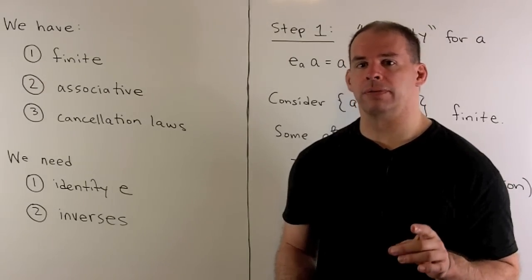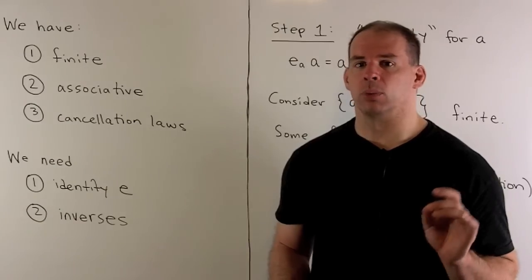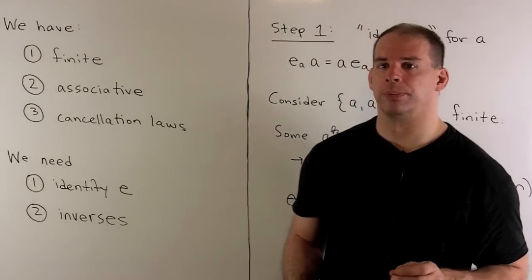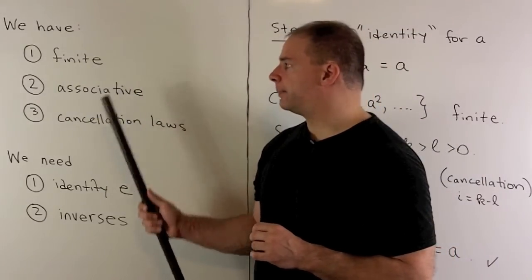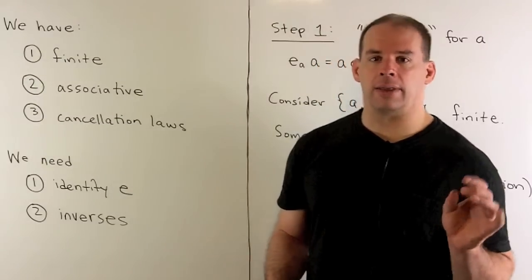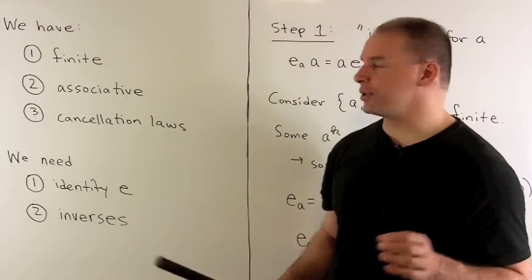Before we get to the proof, let's state what we're given, what we're trying to show. We have that G is finite, the multiplication is associative, and the multiplication has cancellation laws.